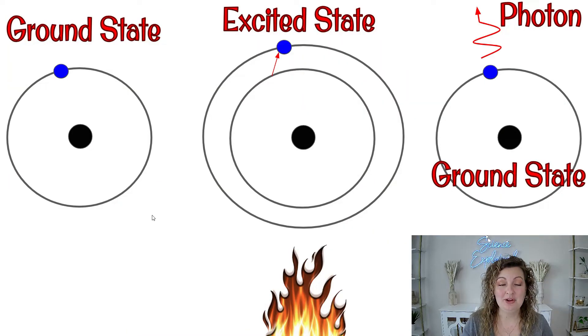Remember that when we have an electron in its ground state, which is its original starting orbital, when we apply some kind of thermal energy or heat to it, it will go to its excited state. That's when it jumps up to the next orbital, but it can't stay there forever.